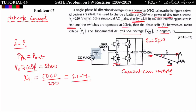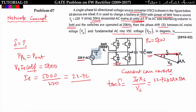With I_s = 22.72A, we can find δ using: tan δ = (I_s × X_s) / V_s, where X_s = ω·L = 2π × 50 × 5 × 10⁻³ Ω. Substituting all values gives δ = 9.21 degrees. This was asked in GATE 2016 Set 2.